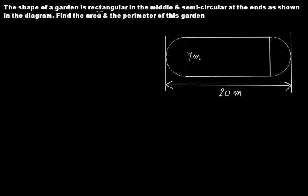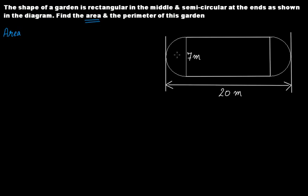The shape of a garden is rectangular in the middle and semicircular at the ends as shown in the diagram. The center part of this garden is rectangular and at the two ends we have two semicircles of equal measurements. Find the area and the perimeter of this garden. The area equals the area of the two semicircles plus the area of the rectangle.